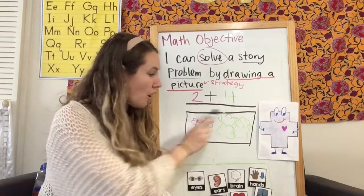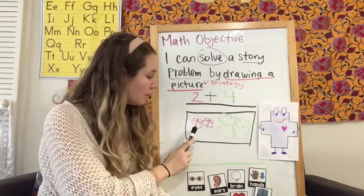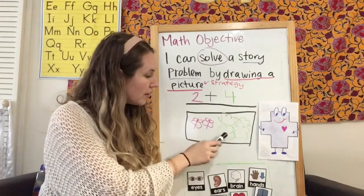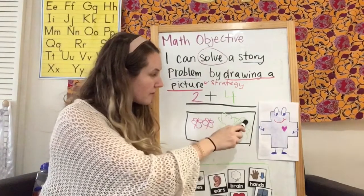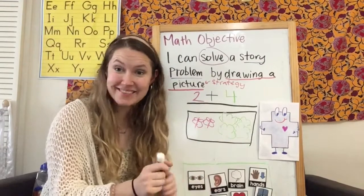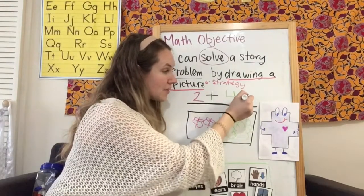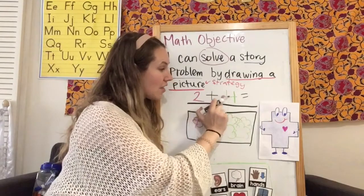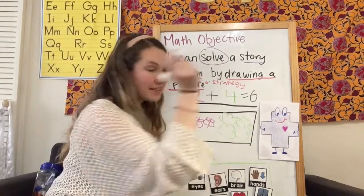I'm going to count all my things here that Peter saw in his walk. One, two, three, four, five, six.